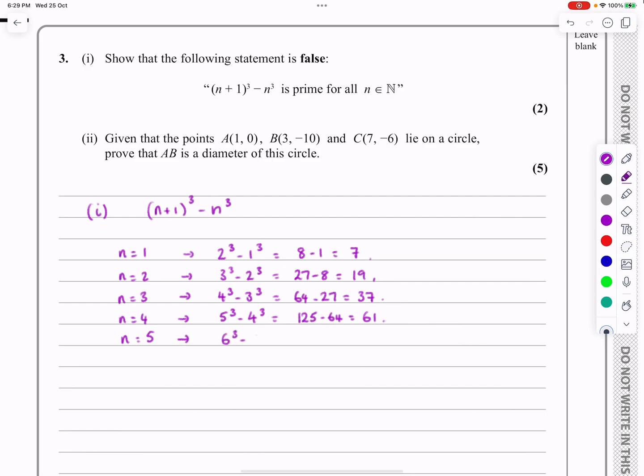So this is going to be 6³ - 5³, which equals 216, take away 125. Yep, well, that's equal to 91.